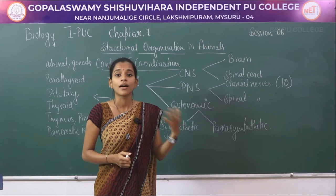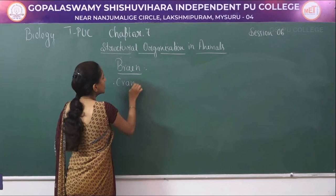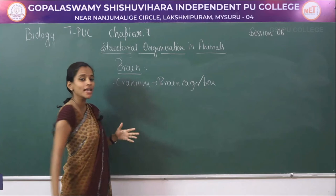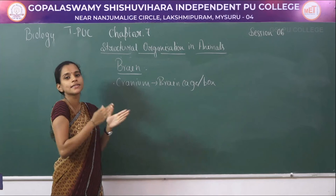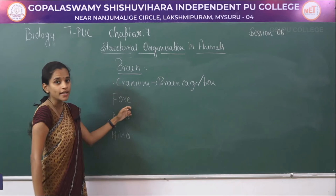Next we will study about the brain and its parts. The brain is present within the brain cage called the cranium. The brain is divided into three parts: forebrain, midbrain, and hindbrain.